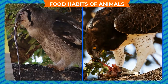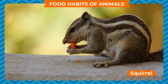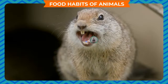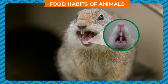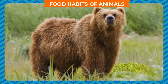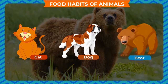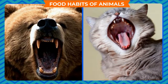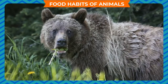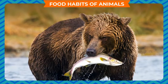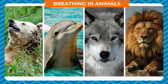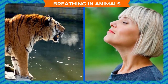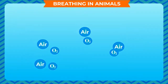Rodents such as rat and squirrel feed on nuts, seeds, and fruits, so their front teeth are small and sharp. Omnivores such as cat, dog, and bear have small pointed front teeth which help them to eat plants as well as flesh of animals.